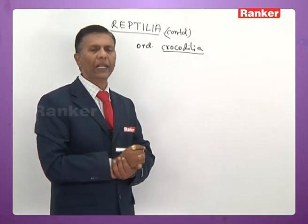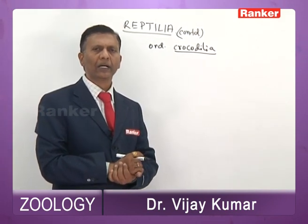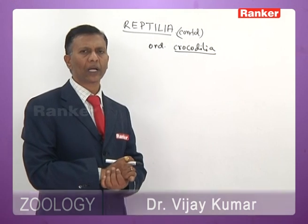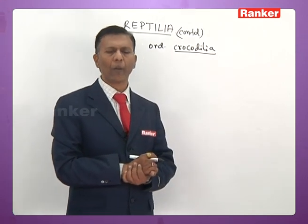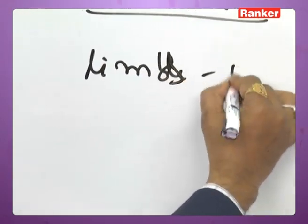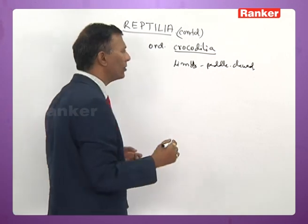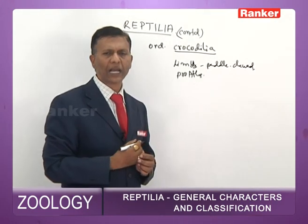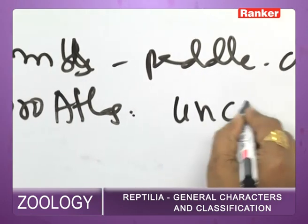Order Crocodilia belongs to superorder Archosauria. Crocodilians live in freshwater and brackish water including mangrove areas, but none live in oceans. The body is dorsoventrally compressed and the tail is laterally compressed. Limbs are paddle-like and clawed. A proatlas (remnant of notochord) is present, as in Sphenodon. Uncinate processes are present on the last cervical and first thoracic ribs.